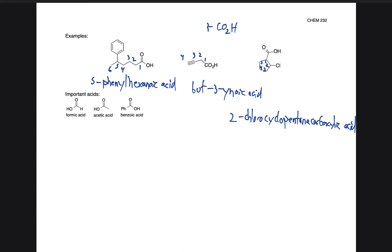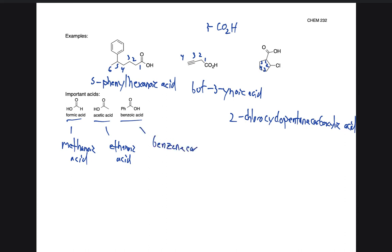Because the carboxylic acid group is coming off of a ring, we have to keep it as 'carboxylic acid' — we can't say 'cyclopentanoic acid.' We have to call it carboxylic acid because it's coming off the ring. Some general names for acids: formic acid we could call methanoic acid, acetic acid we could call ethanoic acid, and then we have benzoic acid — the phenyl group coming off of that carboxylic acid group. The non-IUPAC common names are acetic acid, formic acid, and benzoic acid.